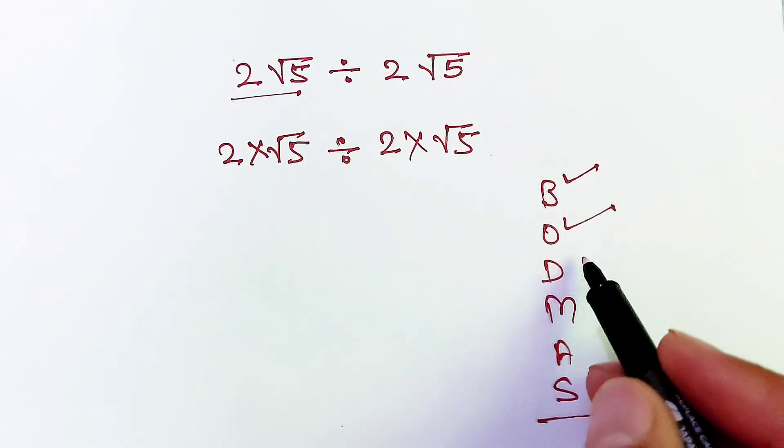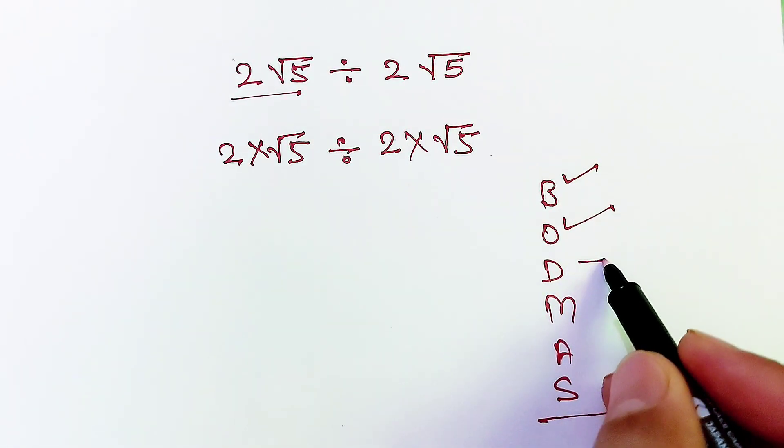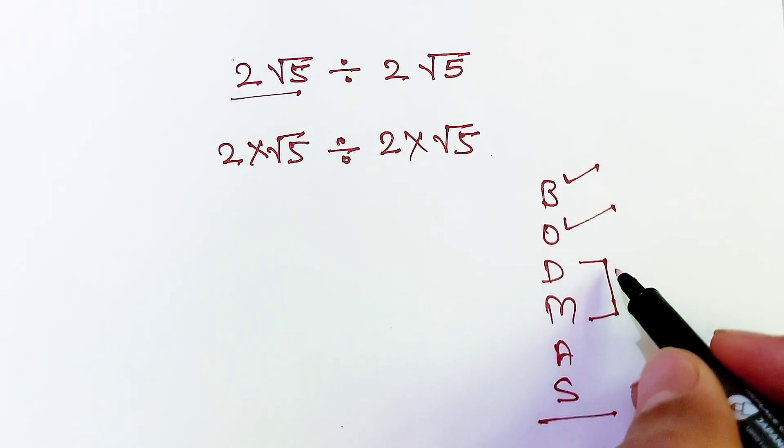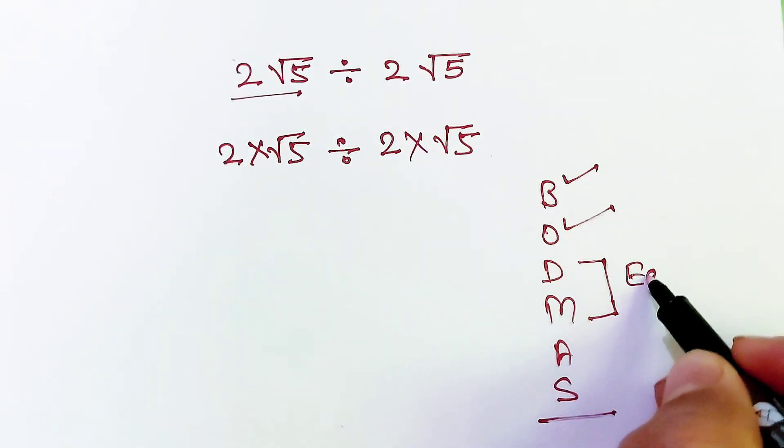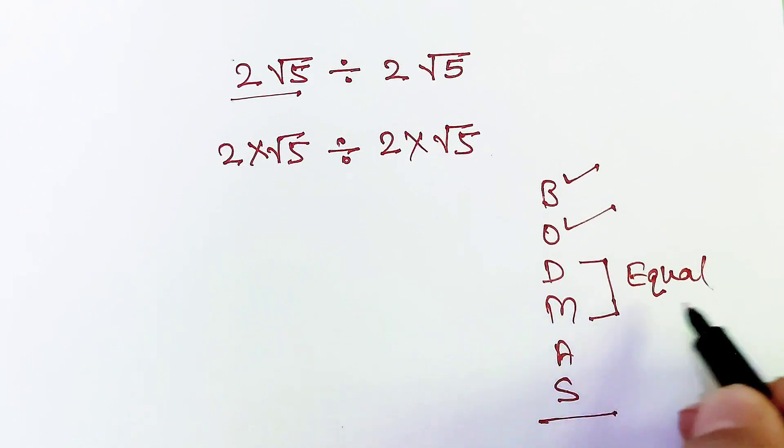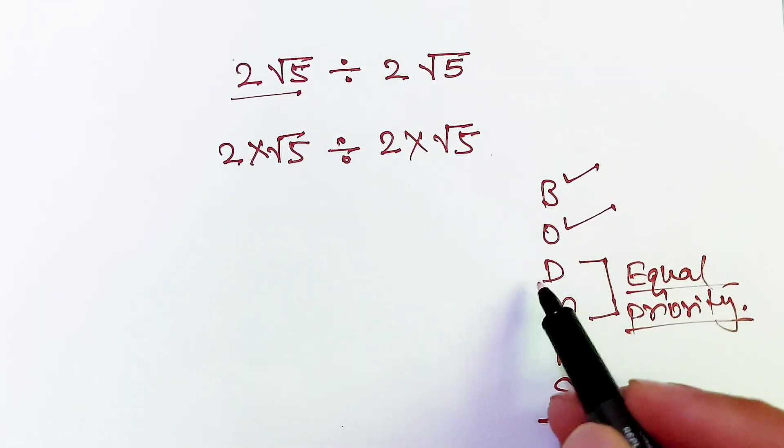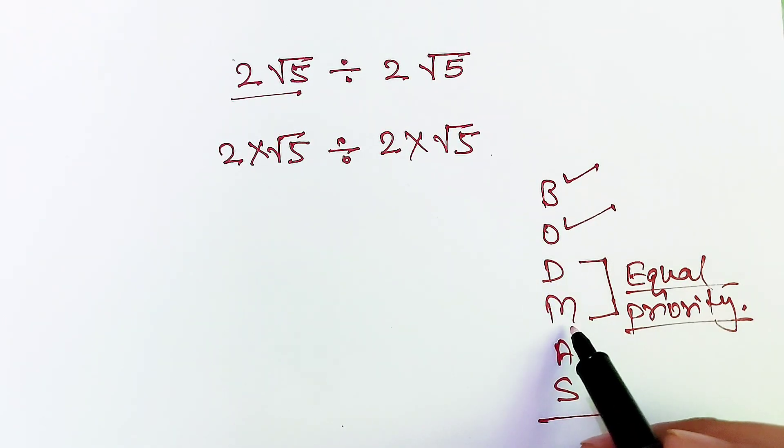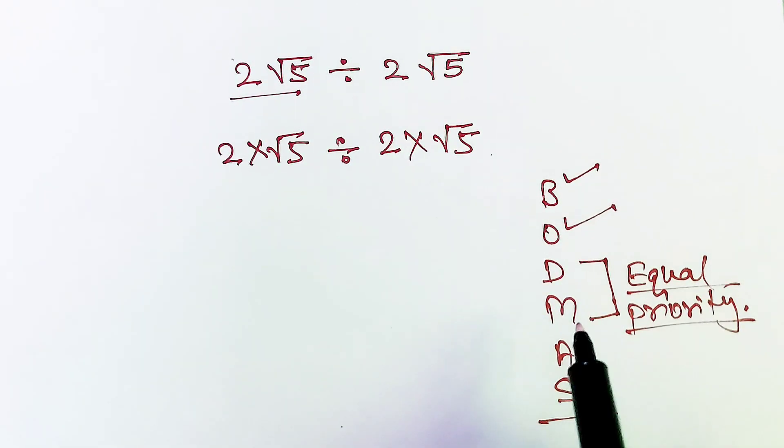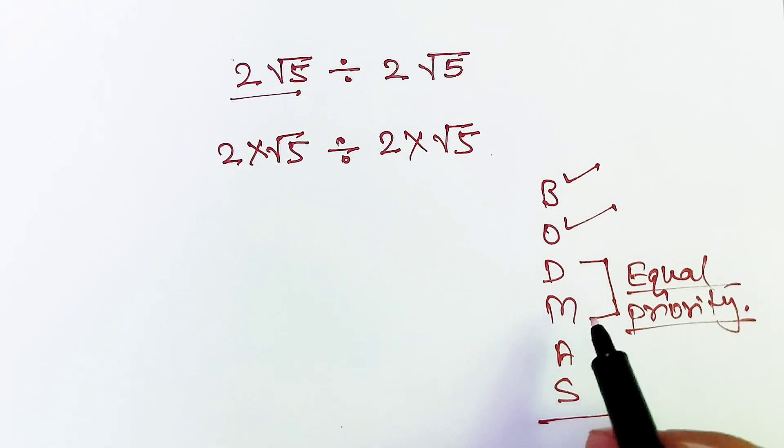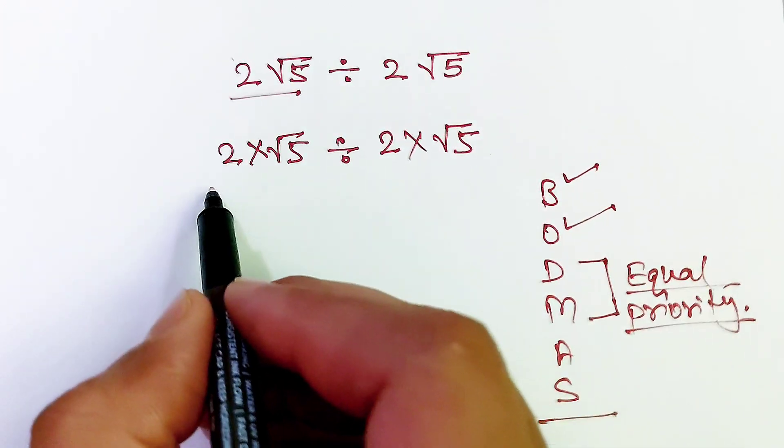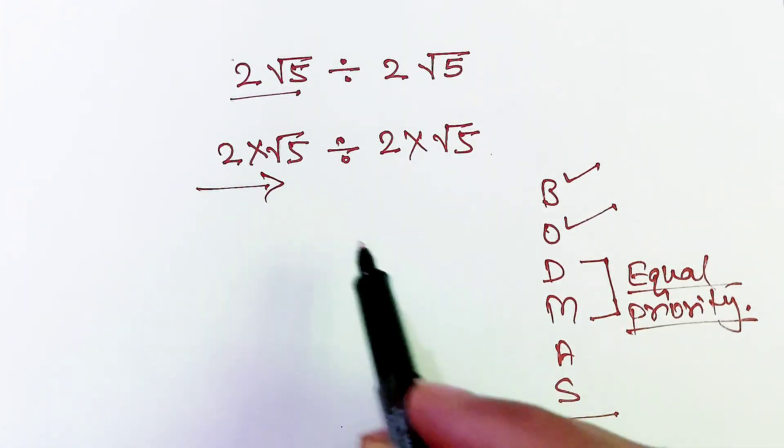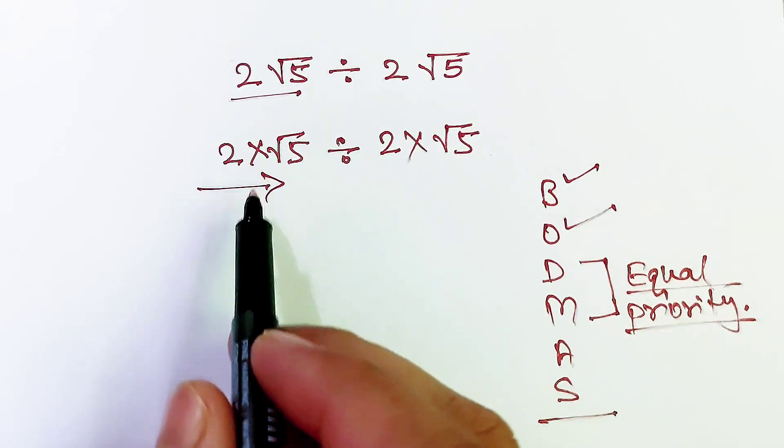Third and fourth are divide and multiply. These are given equal priority. Please keep it in mind, these are given equal priority. We will not solve first divide and second multiply, or first multiply and second divide. We will solve according to the situation of question and from left to right, whichever comes first we will solve.